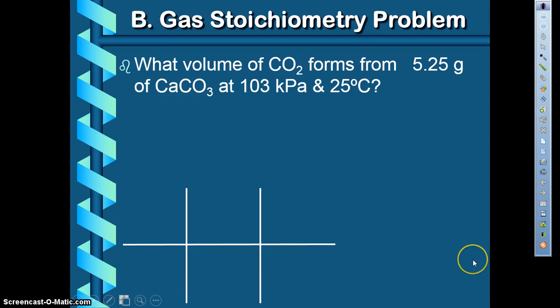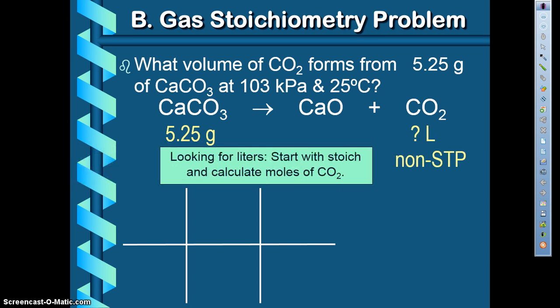So let's start with this question. What volume of CO2 forms from 5.25 grams of CaCO3 at 103 kPa and 25 degrees Celsius? So just like before, you always start with a balanced chemical reaction. So let's back up and start there.